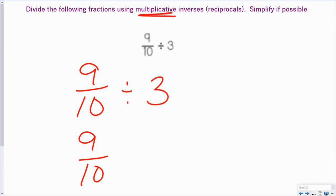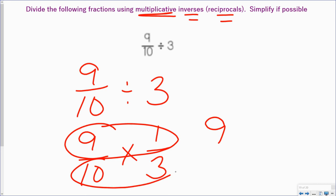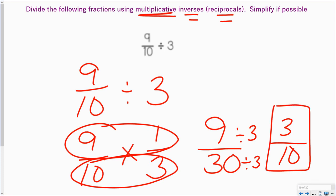Multiplicative means change this to multiplication. Inverses or reciprocals would be 1 over 3. 9 times 1 is 9. 3 times 10 is 30. Now on this one, both of these numbers can be divisible by 3 because 9 divided by 3 is 3, and 30 divided by 3 is 10. And so my final answer would be 3 tenths.